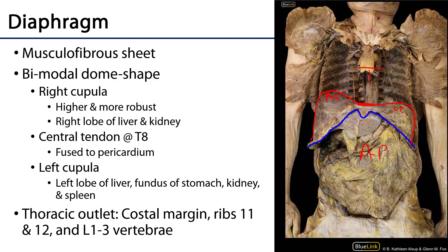If we think about the relationship of the abdominal pelvic viscera, that helps to understand the shape of the diaphragm, and we'll get to these organs in the GI sessions. Deep to the right cupula we have the right lobe of the liver, which is very robust, as well as the right kidney and suprarenal gland. Those are more associated with the posterior aspect of the diaphragm rather than the cupula itself.